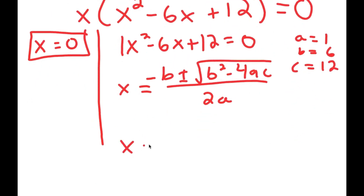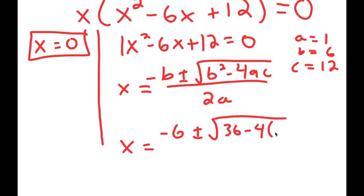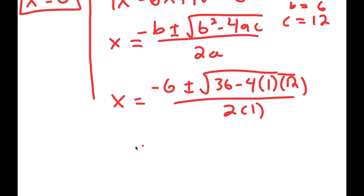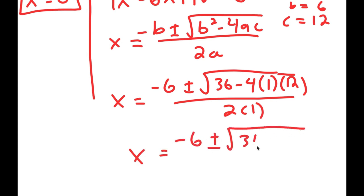If I plug these values into the quadratic formula, I get negative 6 plus or minus the square root of b squared — so 6 squared, which is 36 — minus 4 times a, which is 1, times c, which is 12, all over 2a, so 2 times 1.